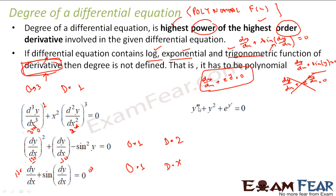Next: y''' + y² + e^(y') = 0. Here y''' is third order, y² has no derivative, and e^(y') is first order. The maximum order is 3, so order is 3. For degree, we check: it has an exponential function, and it is e^(y') — exponential of a derivative, not of the variable. Therefore degree is not defined.